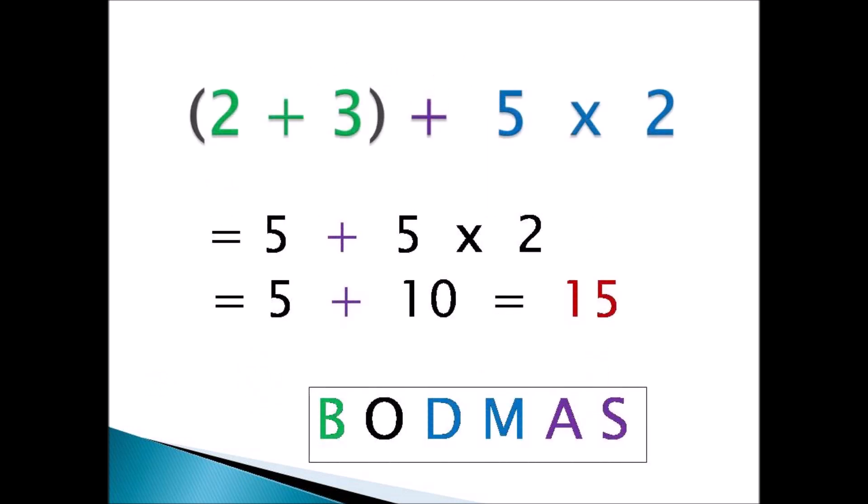Here's a harder one: in brackets, 2 plus 3, then plus 5 times 2. What do you do first? Look at BODMAS — brackets first. 2 plus 3 is 5. So you have 5 plus 5 times 2. Now you have to multiply before you add, so 5 times 2 is 10. Then 5 plus 10 — the answer is 15. Remember, you do things in order.